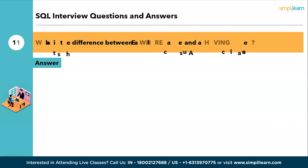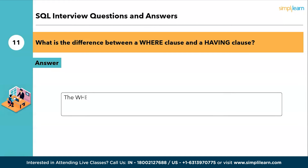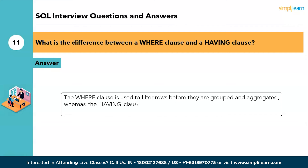The eleventh question: what is the difference between a WHERE clause and a HAVING clause? The WHERE clause is used to filter rows before they are grouped and aggregated, whereas the HAVING clause is used to filter the results of aggregate functions applied to grouped rows.